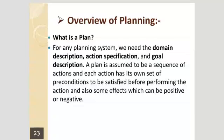How is he going to achieve his goal and reach that destination? These are the things which require planning. He could go by railway, by bus, by travel, by rickshaw, by cycle, or by aeroplane. A plan is assumed to be a sequence of actions, and each action has its own set of preconditions to be satisfied before performing the action, and also some effects which can be positive or negative.